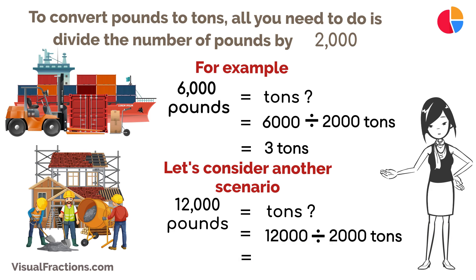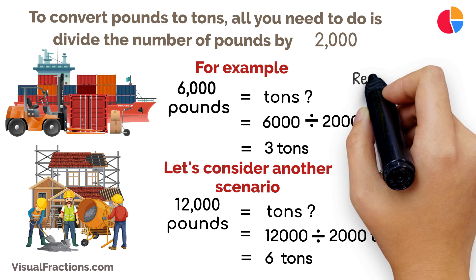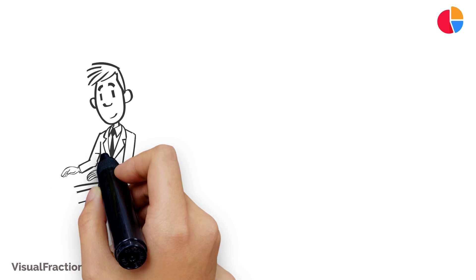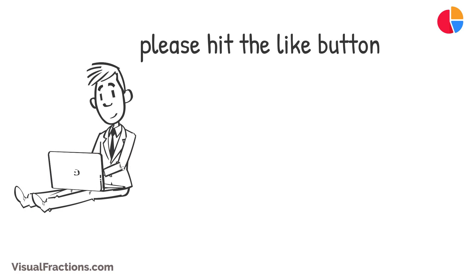That gives you six tons. And there you have it — converting pounds to tons is a simple process. Remember that one ton equals two thousand pounds. With a bit of practice, you'll become skilled at making this conversion, allowing you to work with weight measurements more effectively.